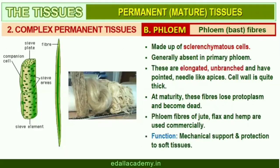Phloem fibers, or bast fibers, are made up of sclerenchymatous cells. These are generally absent in the primary phloem but are found in the secondary phloem. They are much elongated, unbranched, and have pointed needle-like apices. The cell wall of phloem fibers is quite thick. At maturity these fibers lose their protoplasm and become dead. Phloem fibers of jute, flax, and hemp are used commercially. The first-formed primary phloem consists of narrow sieve tubes and is referred to as protophloem, and the later-formed phloem has bigger sieve tubes and is referred to as metaphloem.